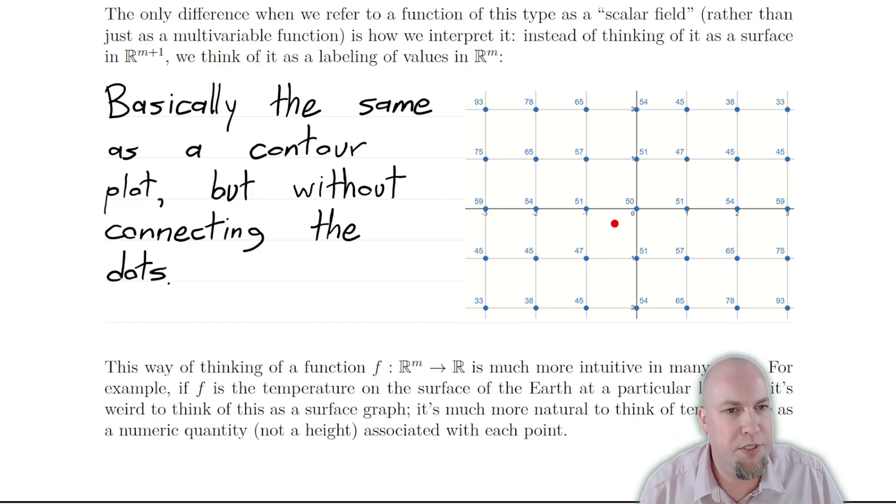So for example, if f of (0,0) is 50, then at the point (0,0), the origin, we're just going to put a little dot that says 50. And then if at the point (1,0) the function value is 51, so f of (1,0) is 51, we just put a little dot there that says 51. And then we do this for lots of points. And that is our standard way of visualizing scalar fields.